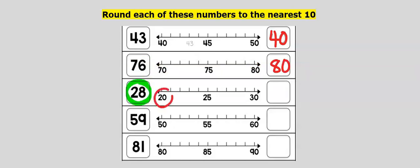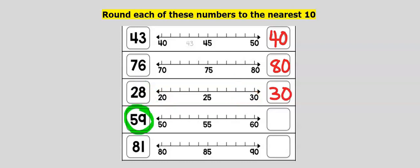28 is between 20 and 30. 28 is closer to 30 than to 20. Our answer is 30. Next, consider 59, which is between 50 and 60. 59 is closer to 60 than to 50. Our answer is 60.